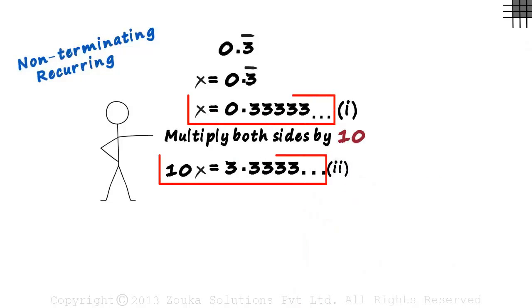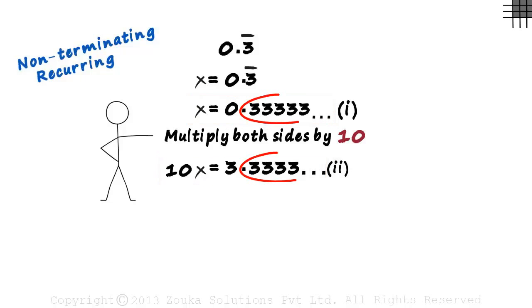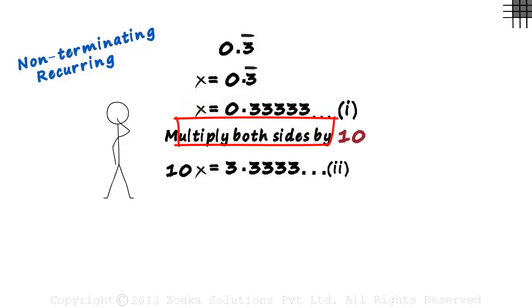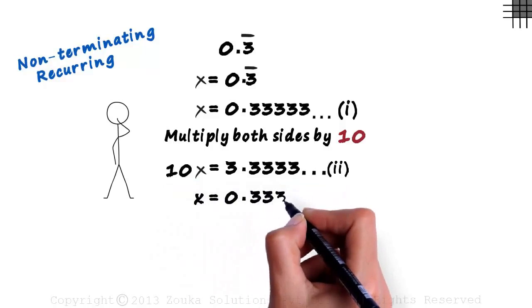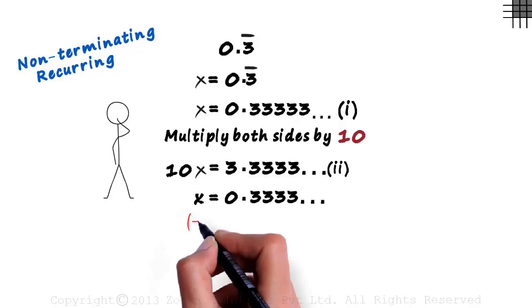Now we have two equations with us. Can we eliminate this 0.3333? Think about it. How about we subtract this equation from this one? So let's write the first equation here: x equals 0.3333 and so on. We subtract the left hand sides and the right hand sides. 10x minus x gives us 9x and 3.3333 minus 0.3333 gives us 3. We finally manage to eliminate the recurring decimal. We have just 3 on the right hand side now.